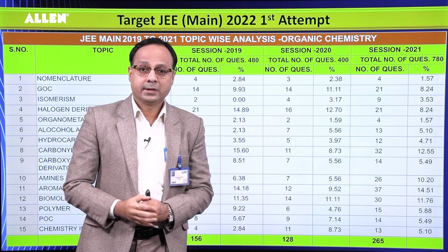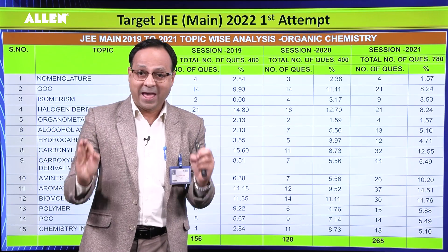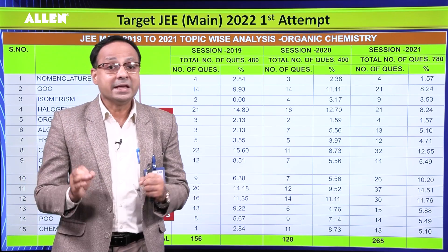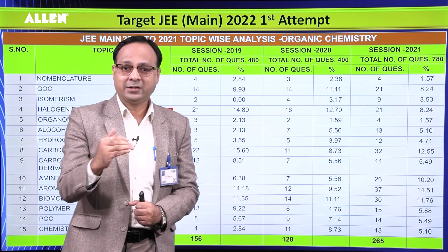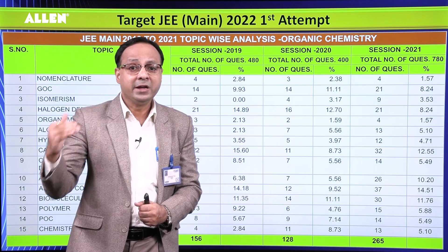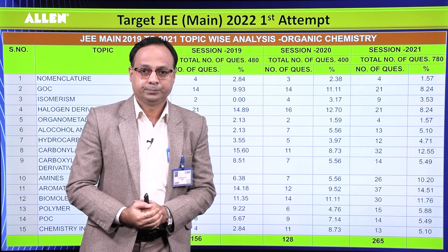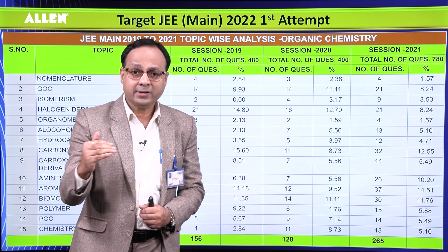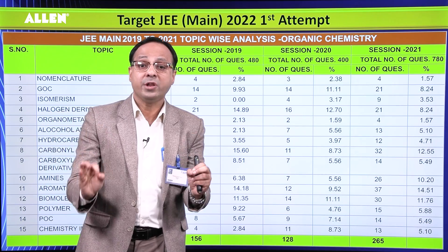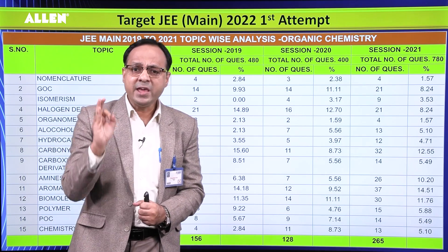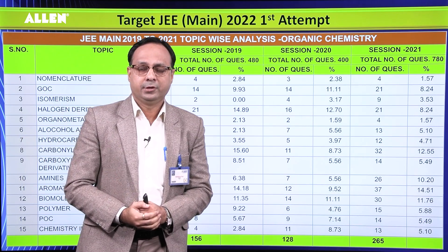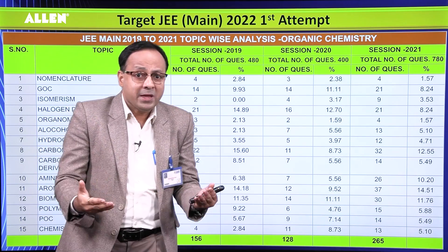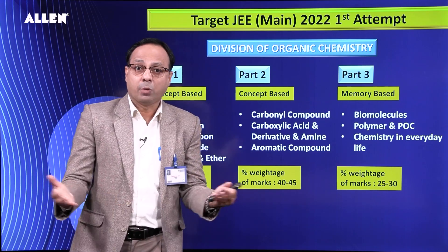Part 2 comprises carbonyl compounds, carboxylic acids and amines, and aromatic chemistry. Lagbhag 40 to 45 percent questions is topic se aate hain — easy, medium, and even tough level. Part 3 comprises chemistry in everyday life, polymers, practical organic chemistry, and biomolecules. These are memory-based topics. Only NCERT — each and every detailed information is topic se padh lijiye. 20 to 25, maybe 25 to 30 percent questions is topic se aate hain.